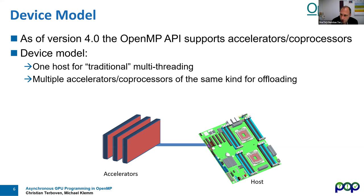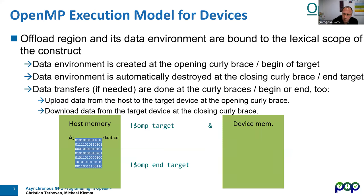OpenMP comes from well before accelerator support was introduced. We have a host — typically equipped with processors, standard cores, and main memory — and we can have one or multiple accelerators of the same kind, to which OpenMP supports the offloading of compute kernels and data. The accelerators are attached to the host.